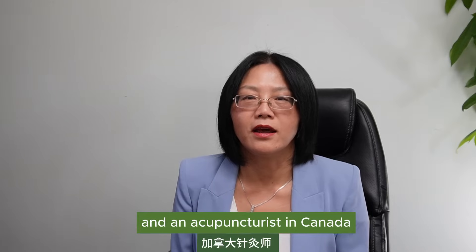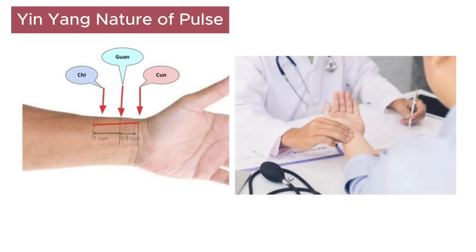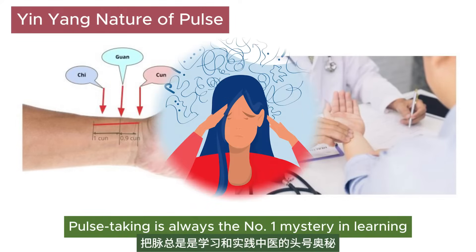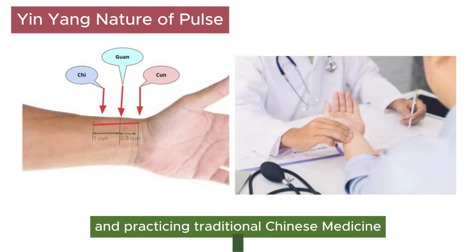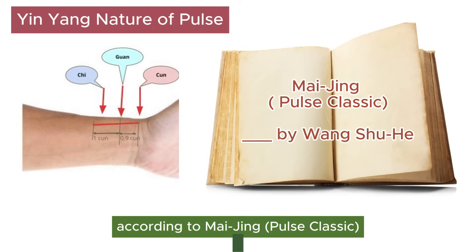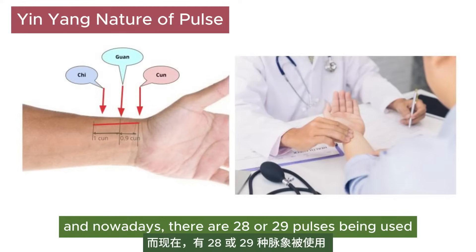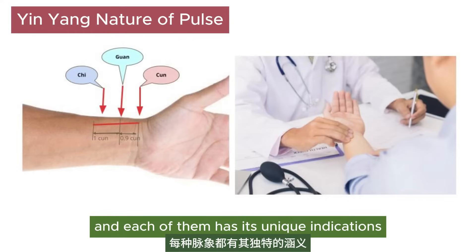Hi, it's Mary, a traditional Chinese medicine tutor and an acupuncturist in Canada. Pulse taking is always the number one mystery in learning and practicing traditional Chinese medicine. There were 24 types of pulses according to the Mai Jing Pulse Classic around 2000 years ago, and nowadays there are 28 or 29 pulses being used, and each of them has its unique indications.